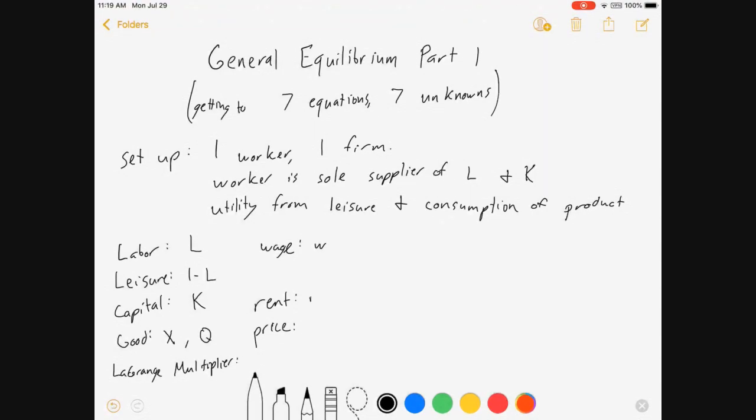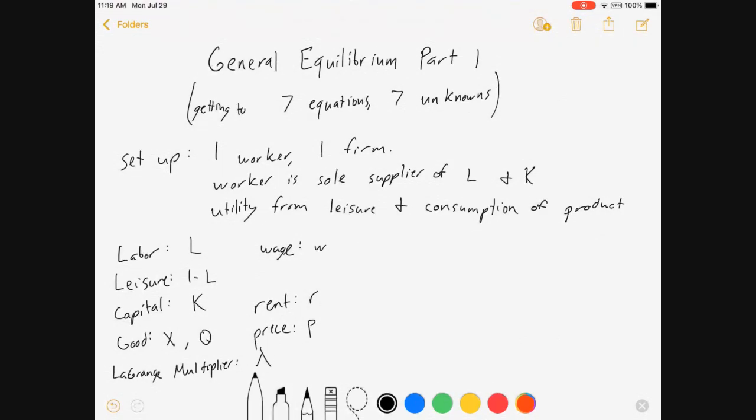Wage, we'll call W. Rent for capital is R. Price for the good is P. And we'll have a Lagrange multiplier through all this for lambda.